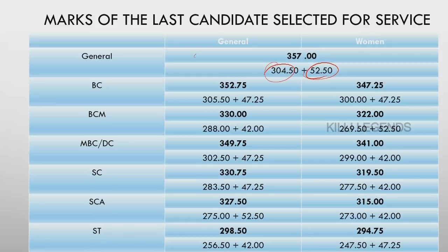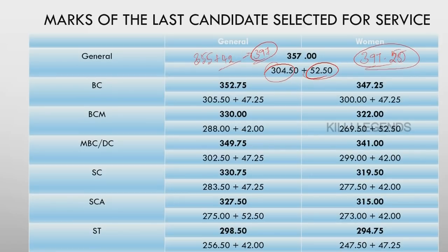If you look at the highest mark, it is 355. But if you look at a particular candidate with 42 marks in the interview, their final total was 397. The highest mark is 397.25. The interview mark is 52.5, making the prelims mark 392.50.